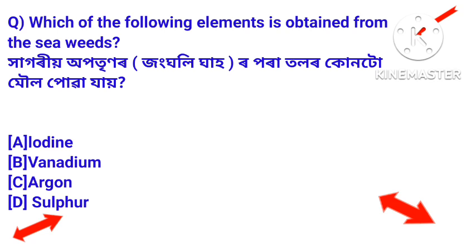Question: Which of the following elements is obtained from the sea? Answer: Iodine — iodine is the element obtained from the sea (seaweed/sea sources).